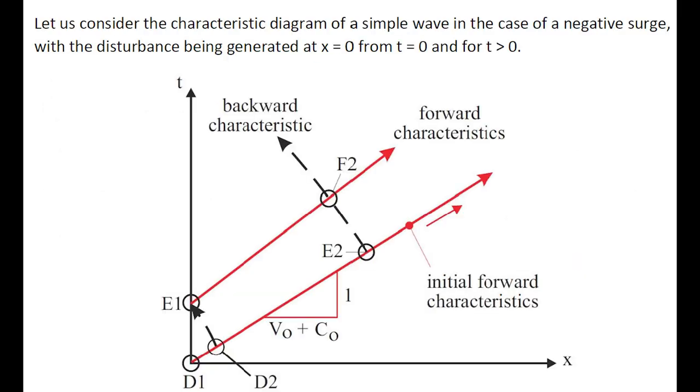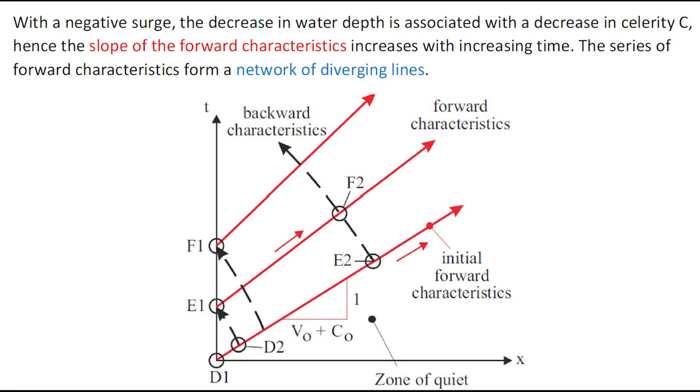Let us consider the characteristic diagram of a simple wave in the case of a negative surge. The disturbance is generated at x equals zero, starting at t equals zero, and onward. For a negative surge, the decrease in water depth is associated with a decrease in celerity c. Hence, the slope of the forward characteristics increase with increasing time. The forward characteristics constitute a network of diverging lines.